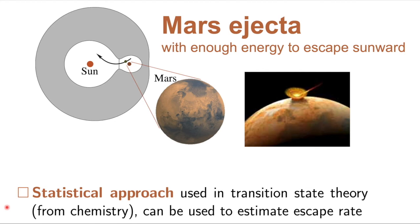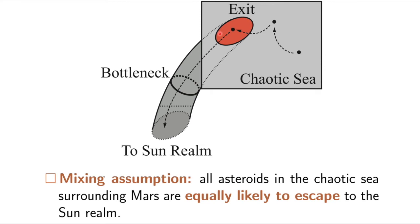Now let me discuss some of the statistical approaches, particularly using tube dynamics. We want to use a statistical approach from chemistry called transition state theory to estimate the escape rate of Mars asteroids, or ejecta that's around Mars but has an energy to escape towards the sun. We want to get an idea of how quickly does it escape. We call the first intersection of a stable manifold as the exit, because anything that approaches this on a Poincaré section will then exit to the sun realm. We are making a mixing assumption, which is common in chemistry, which is that all asteroids in this chaotic sea surrounding Mars are equally likely to escape.